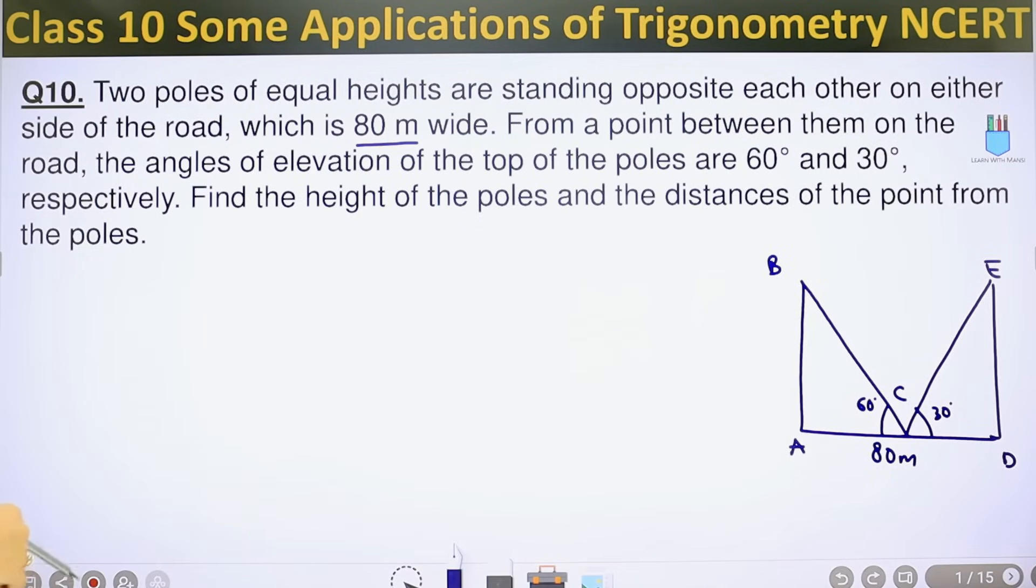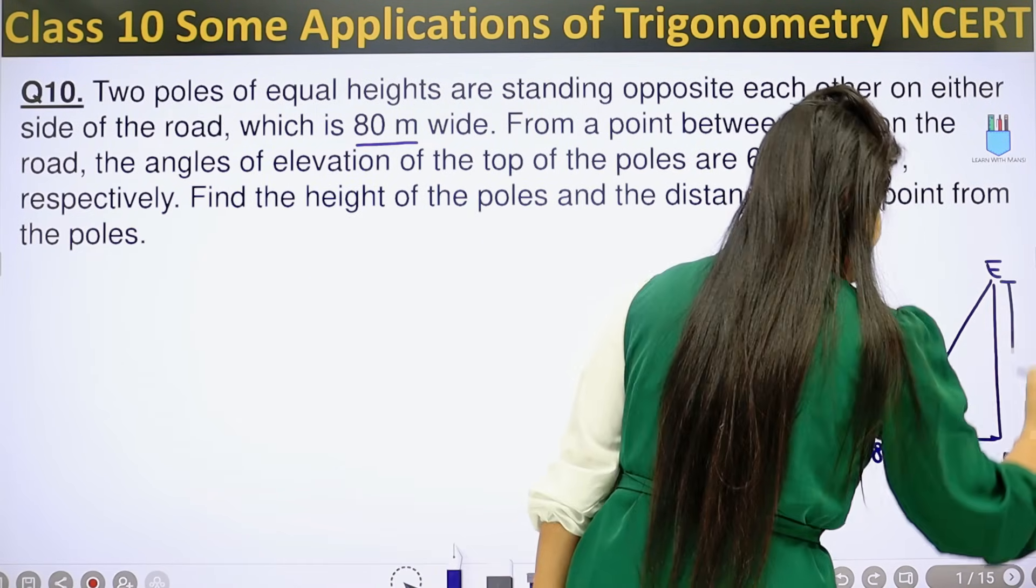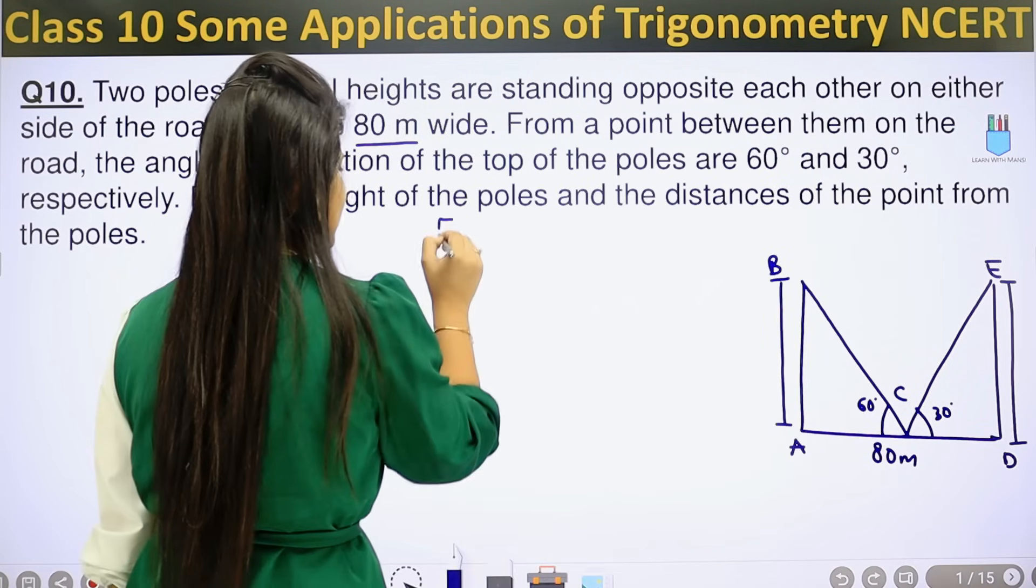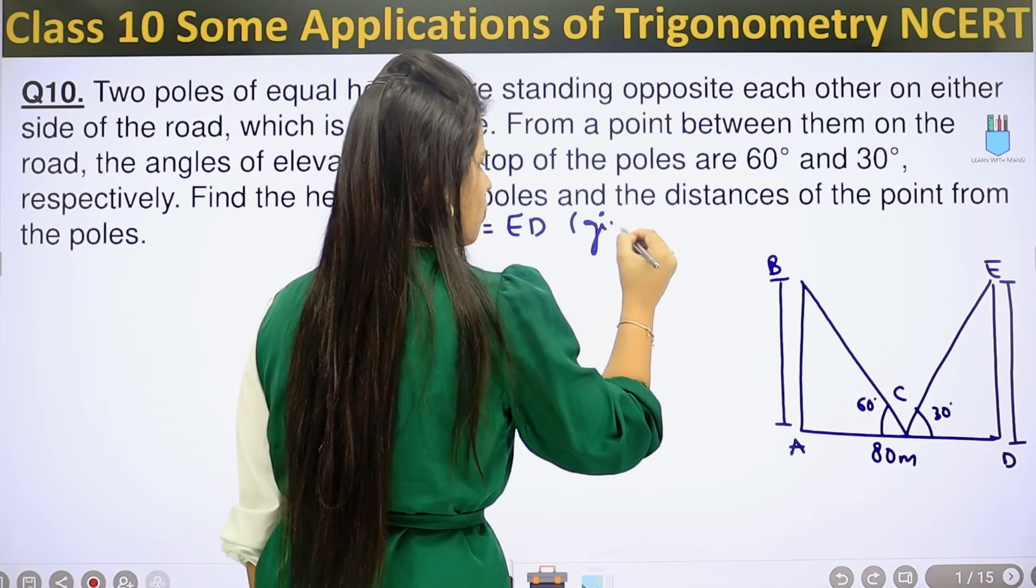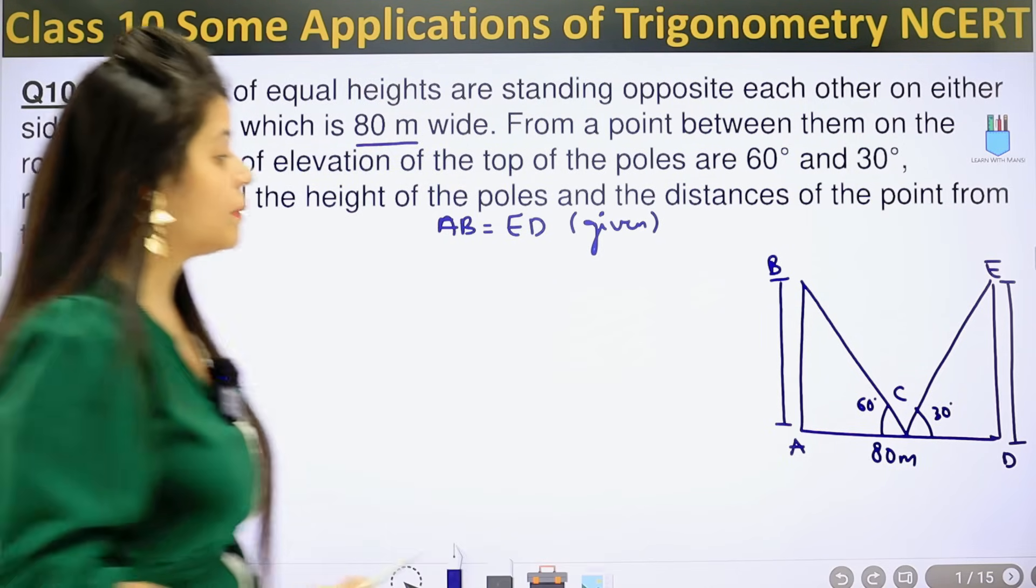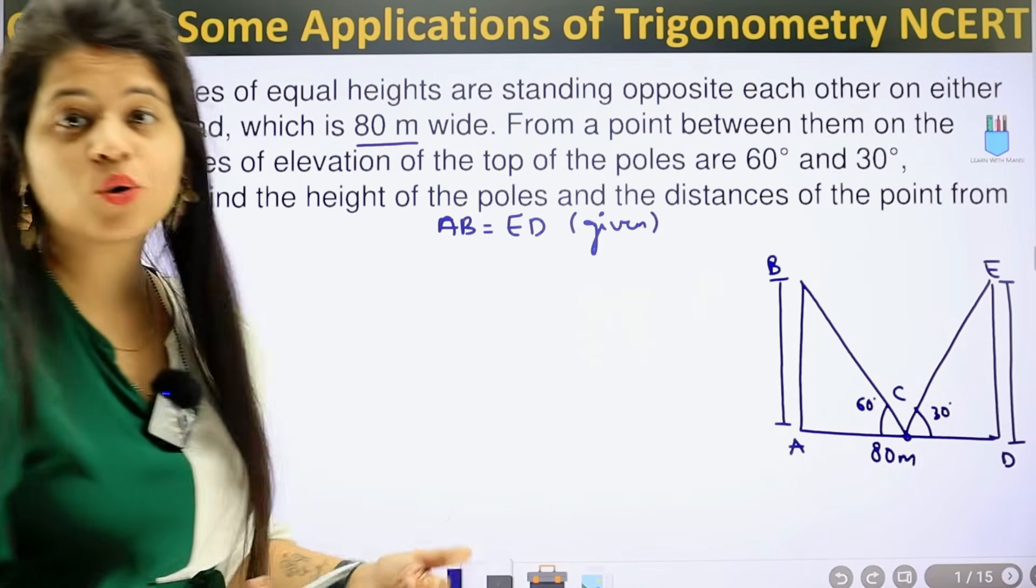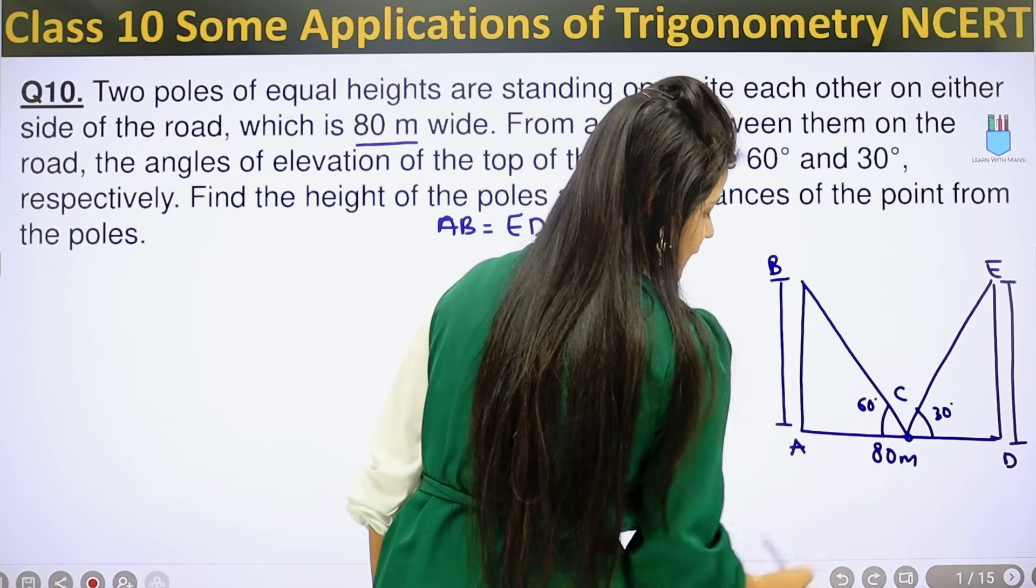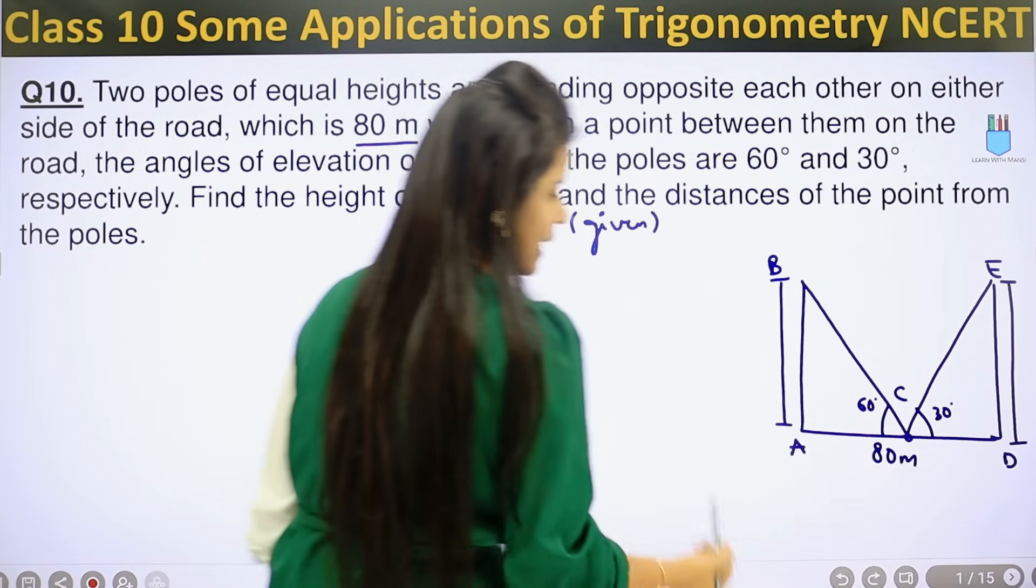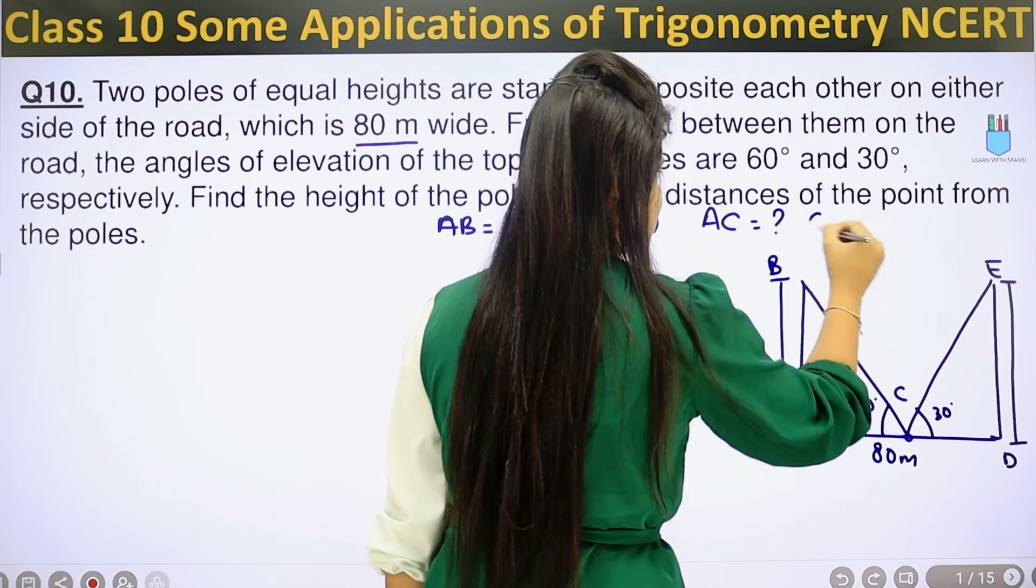Find the height of the poles and the distance of the point from the poles. We have to find the height AB and ED. Also we know that height is equal, so I will write here first that AB is equal to ED. This is given in the question that both poles are same height. The distances will be AC and CD.